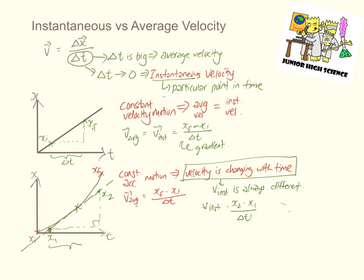I can proceed to calculate the gradient of the tangent line. So, the gradient of the tangent line is simply x2 minus x1 divided by the time interval. This is how I can calculate the instantaneous velocity of the object at that particular point in time.